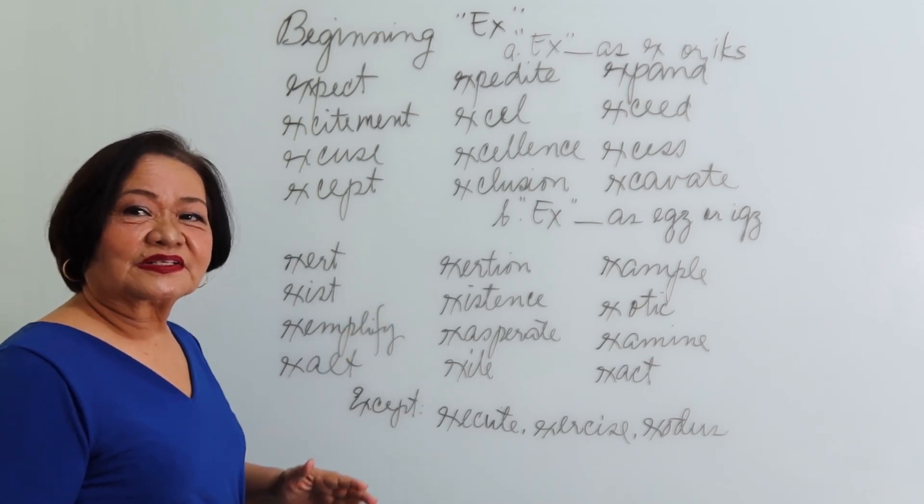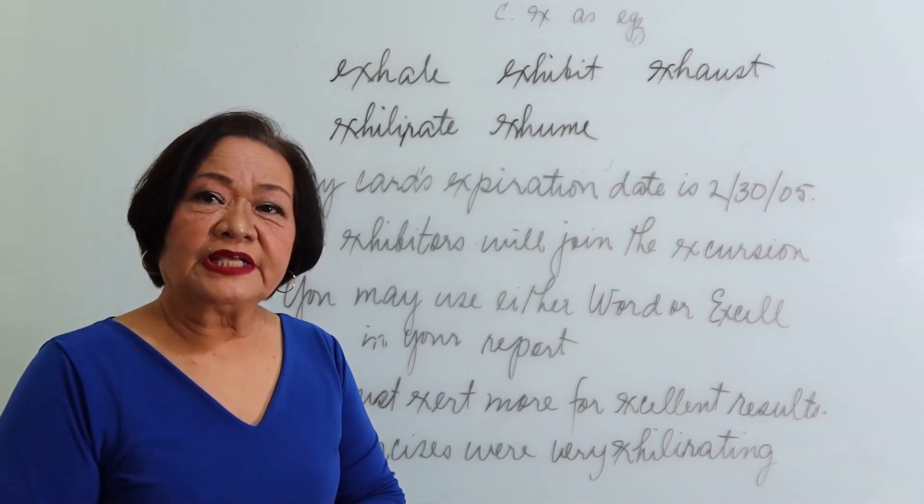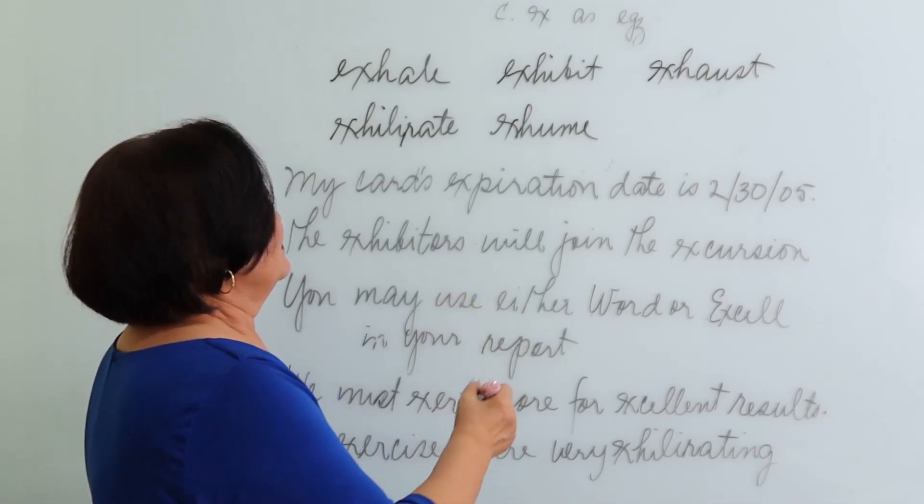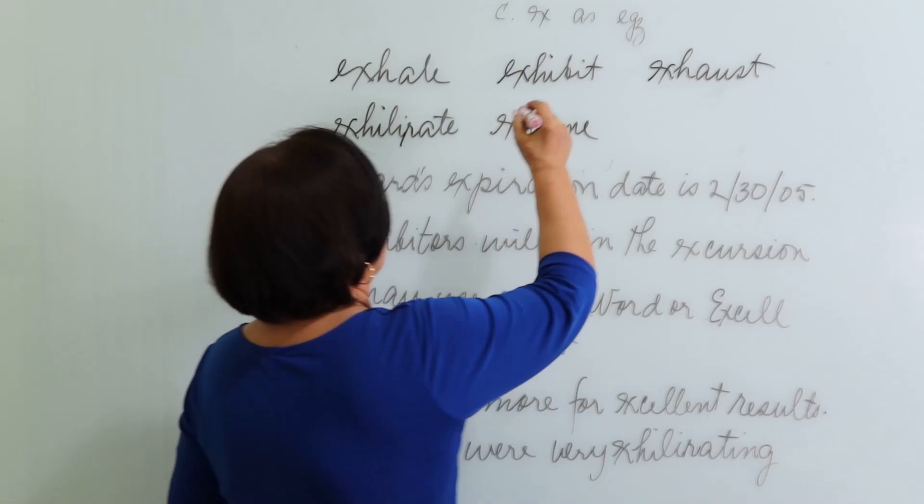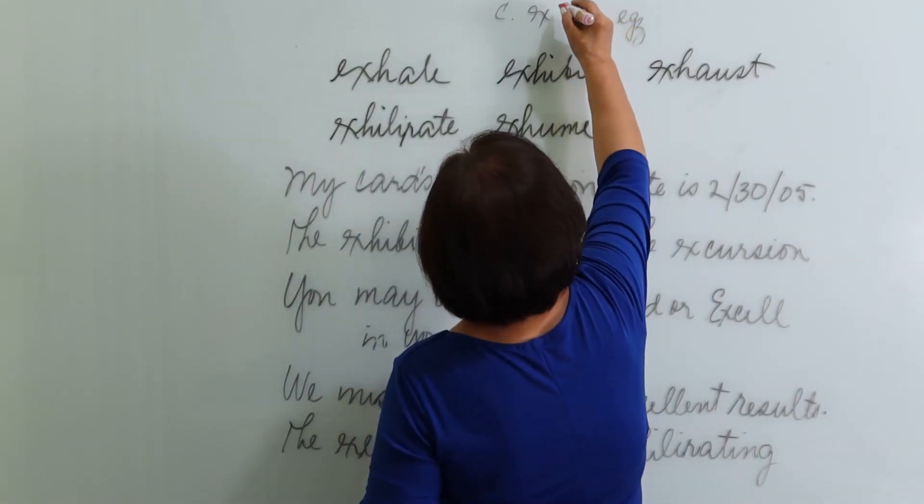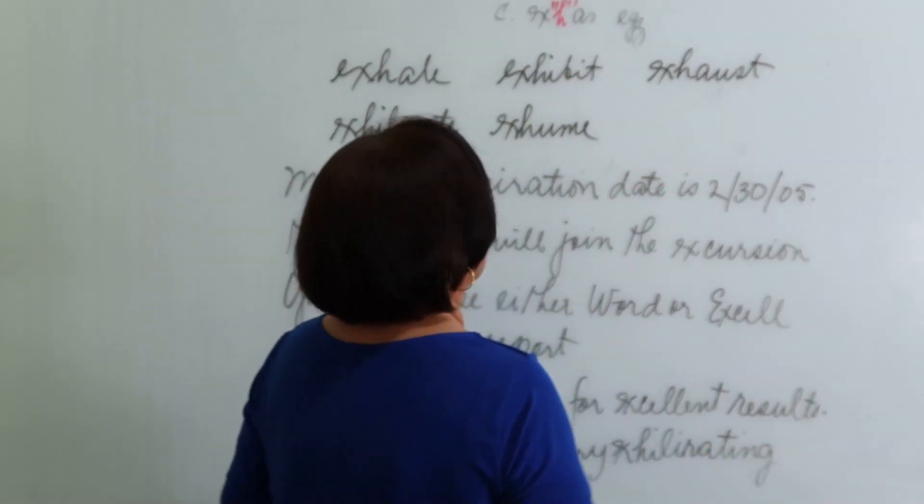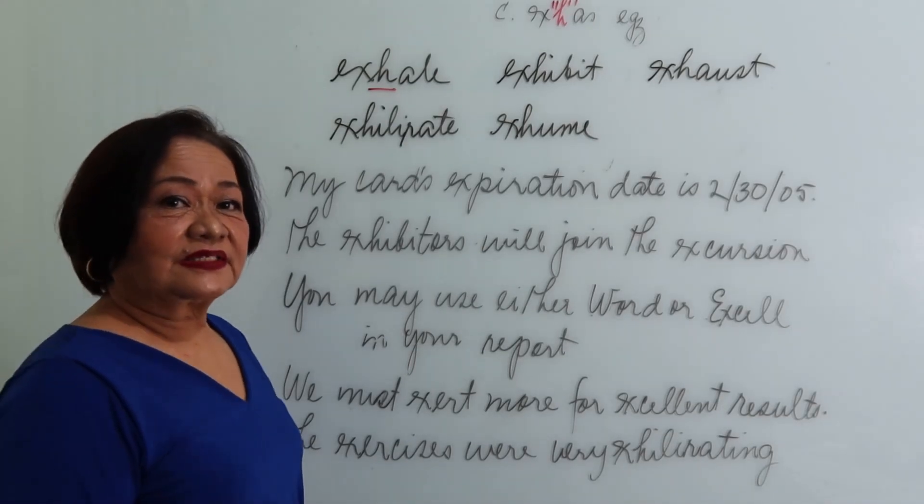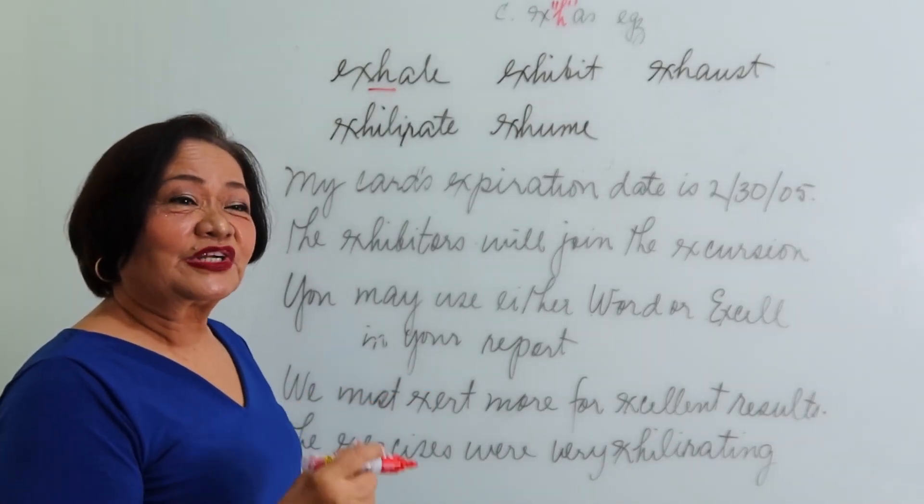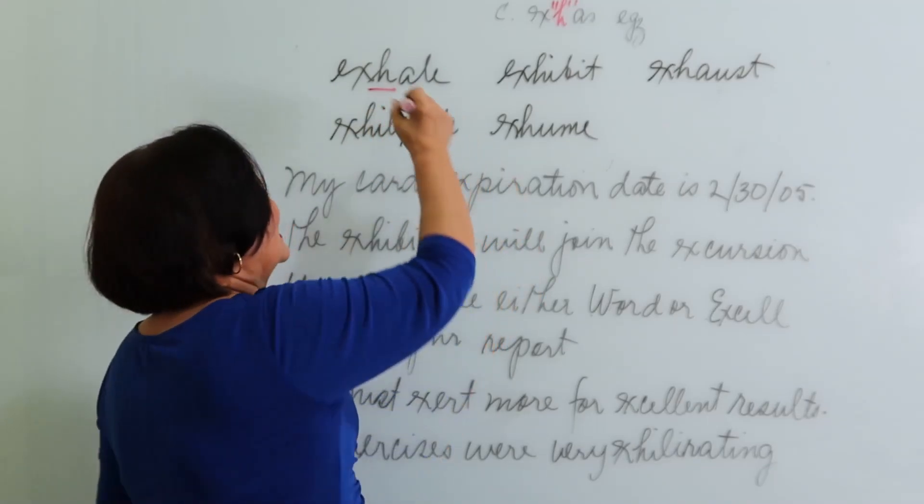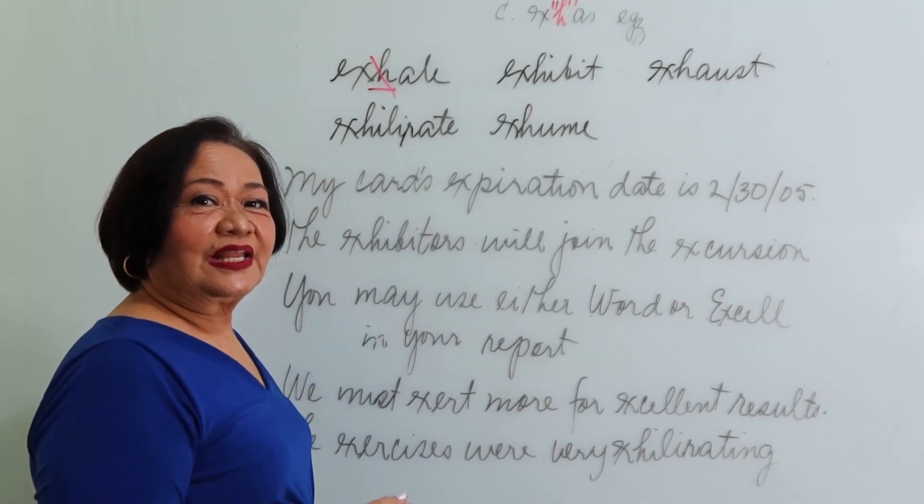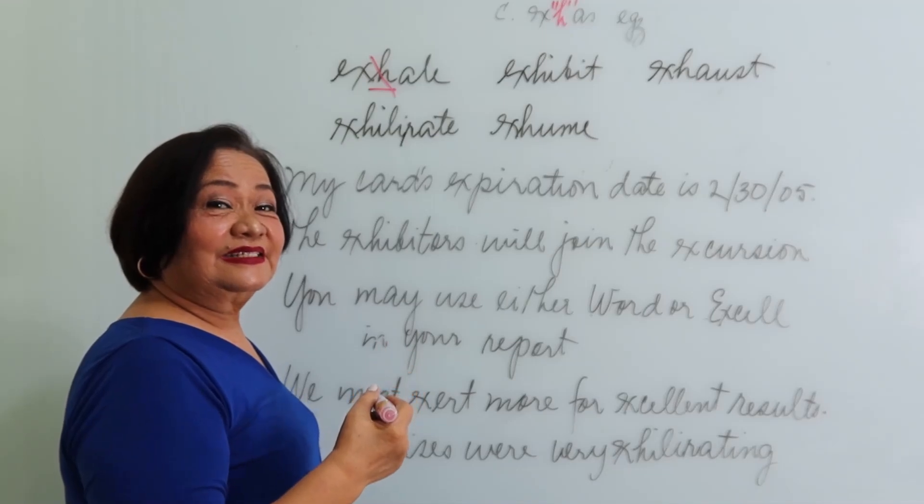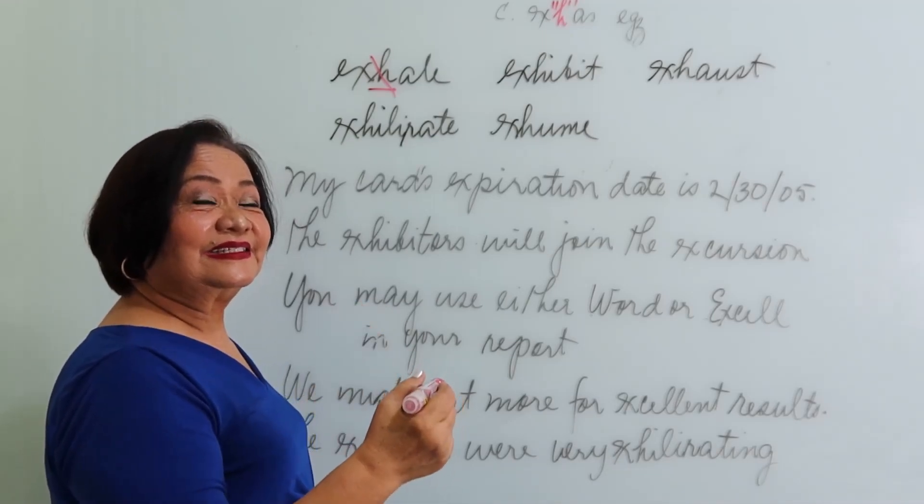Let's be familiar with the other use of the syllable EX. This time we have EX followed by H. Okay, followed by H, as in eggs. It happens that the H here becomes silent. So drop the H. So you have exhale. Okay, drop the H, just like in Spanish, silencio ace. So we have silent H. Exhale, the opposite of inhale. So exhale, exhale.